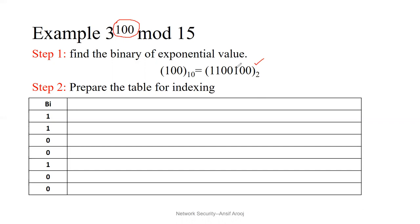In step number two, you will create a table for indexing. In the table, for all the values you have written — for example b = 1100100 — I have written it as 1,1,0,0,1,0,0. Now what does the algorithm say?